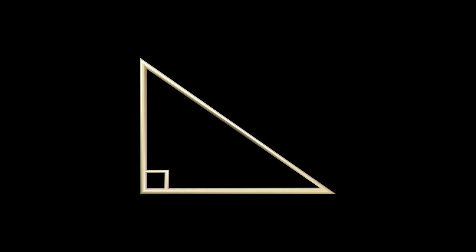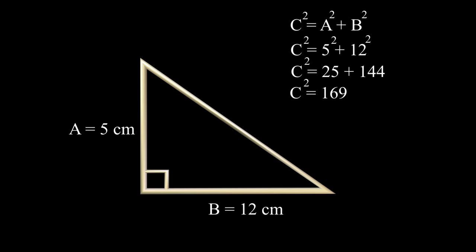According to the theorem, if the sides A and B of a right-angled triangle are 5 centimeters and 12 centimeters, the hypotenuse C can be determined by this formula. C squared equals 5 squared plus 12 squared. Solving, we can see that C squared equals 169. The square root of 169 is 13. C equals 13 centimeters.